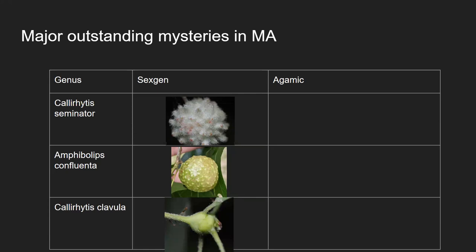We have no idea what the alternate generation is, except I think the confluent oak gall should have something similar to the cookie-eye gall — a fall bud gall. But the other two on white oak, we really have no clue.